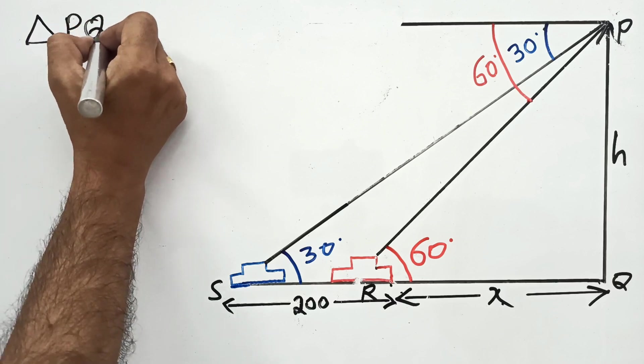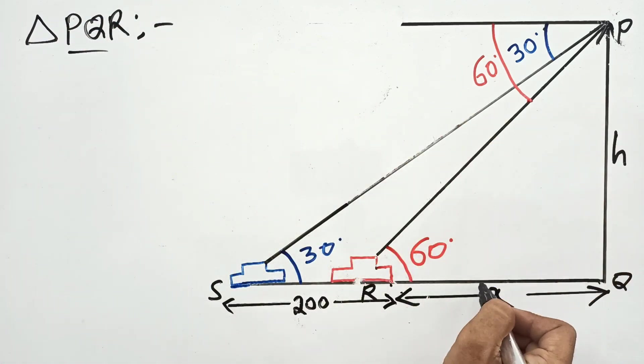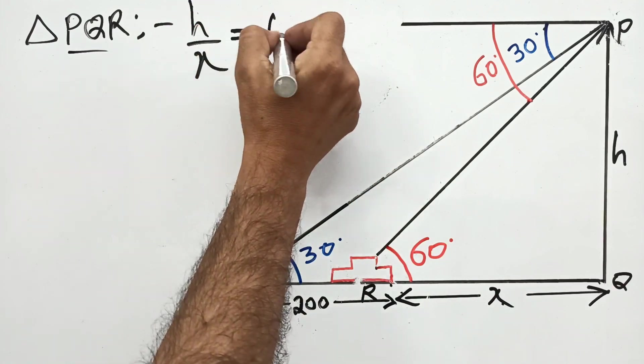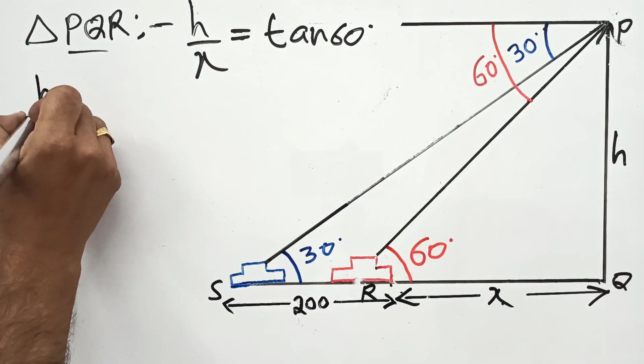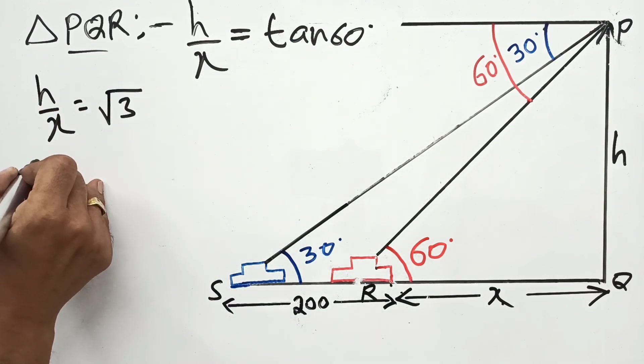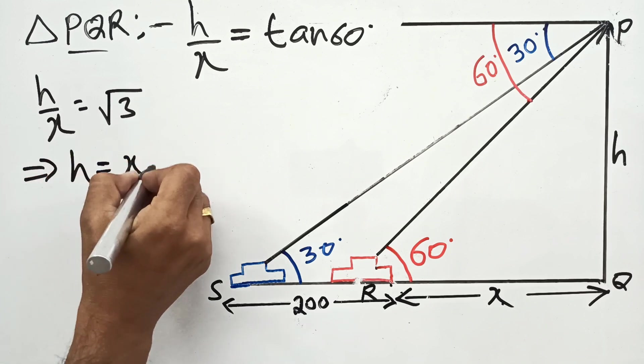In triangle PQR, the smaller triangle, h upon x is tan 60 degrees. Tan 60 value is root 3, so h equals x root 3.